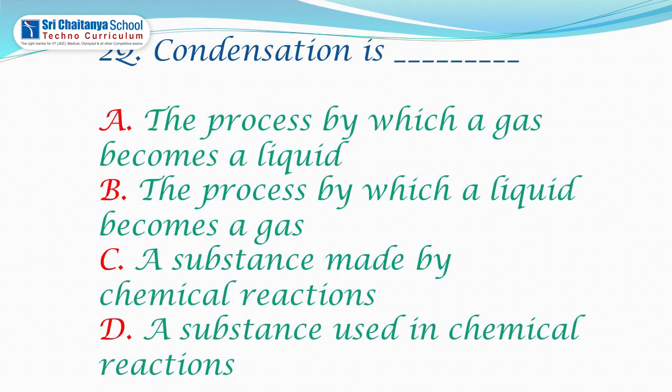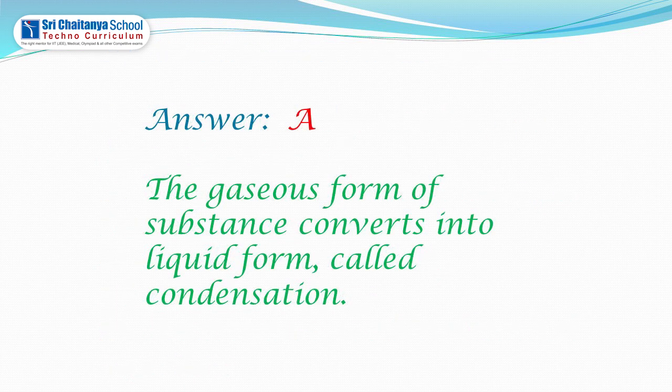What is condensation? A. The process by which a gas becomes a liquid. B. The process by which a liquid becomes a gas. C. A substance made by chemical reaction. D. A substance used in chemical reaction. The gaseous form of a substance converting into liquid form is called condensation. The answer is option A.